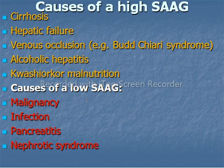Causes of a low serum ascitic albumin gradient, or exudate sample, include malignancy, infection, pancreatitis, and nephrotic syndrome.